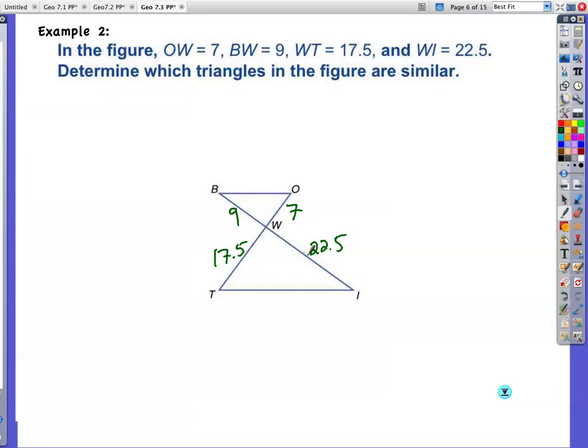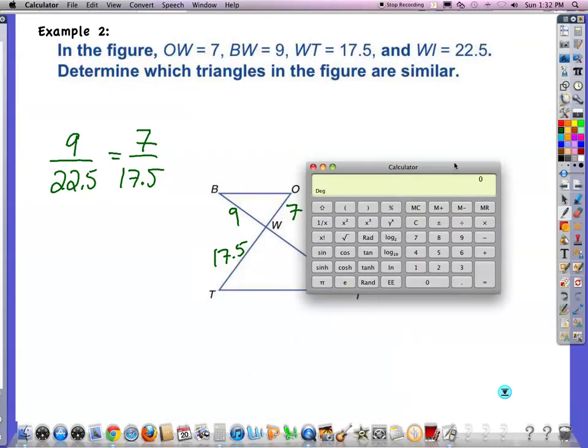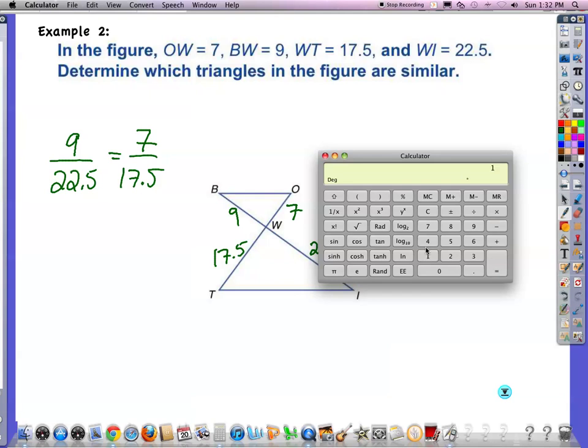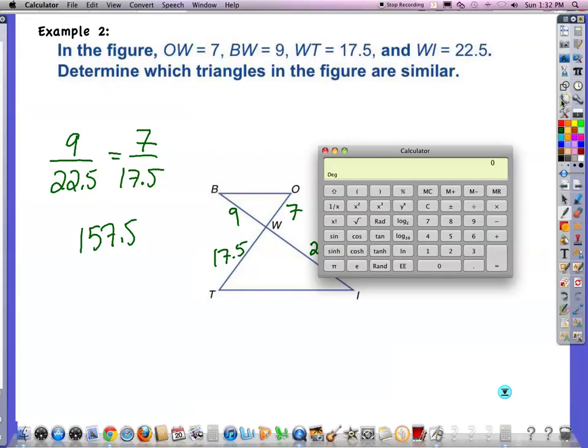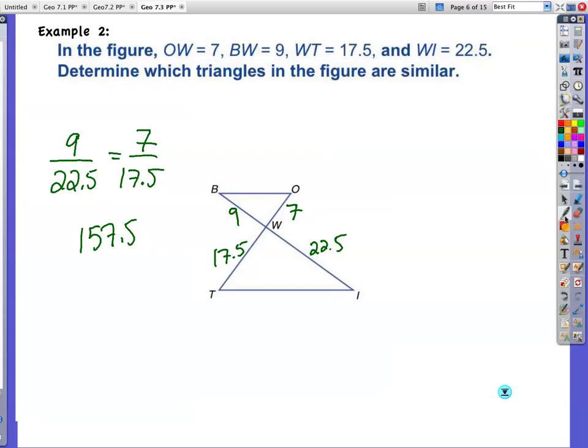Nine is larger than seven. 22.5 is larger than 17.5. So I'm going to see if 9 to 22.5, taking my largers, comparing them with my smaller sides, 7 to the 17.5. And then I cross multiply. Let's see. 9 times 17.5 equals 157.5. Now I'm going to take 22.5 times 7. I'm getting 157.5 again. So that tells me that these sides are proportional.